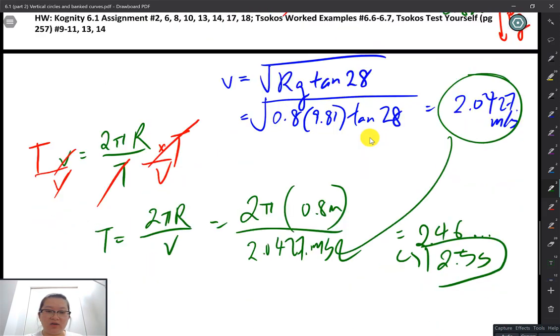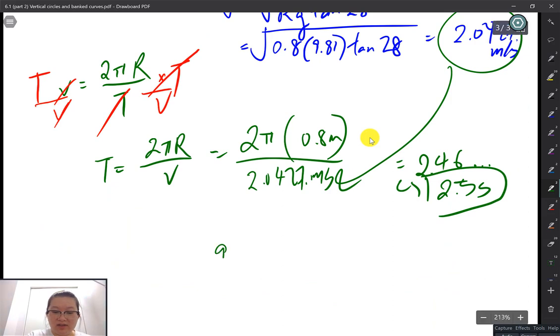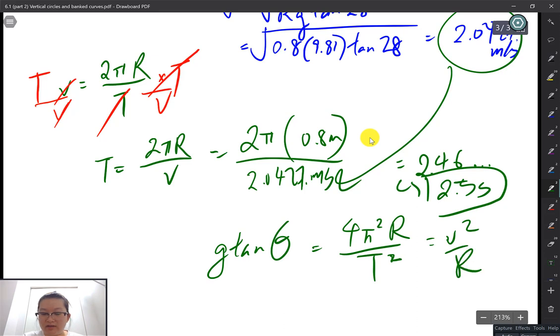Okay. So I could have done this one. g tan θ is equal to 4π²R over T squared. Okay. And that's equivalent to V squared over R. Okay. So if you did it this way and you just directly solve for the radius... Or sorry, directly solve for the period, then that works as well. I did a middle step. Okay. Anyways.